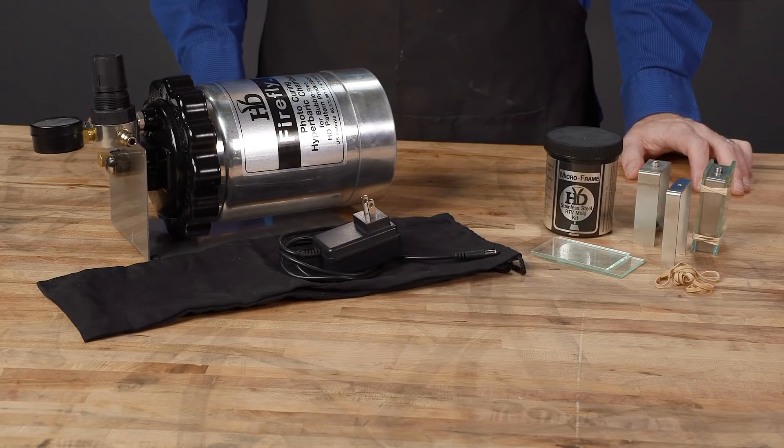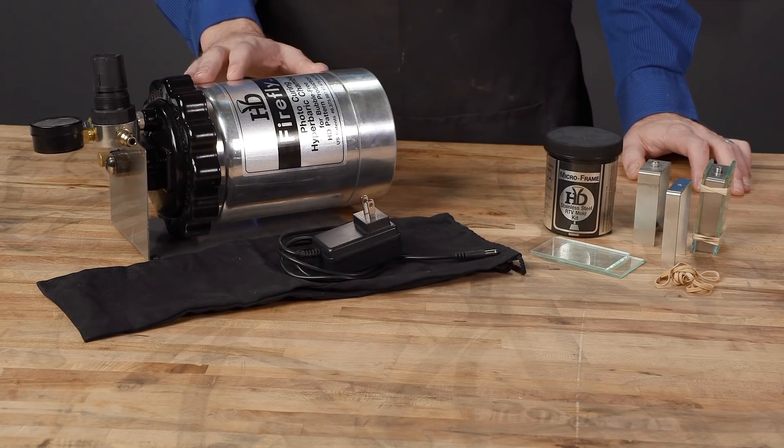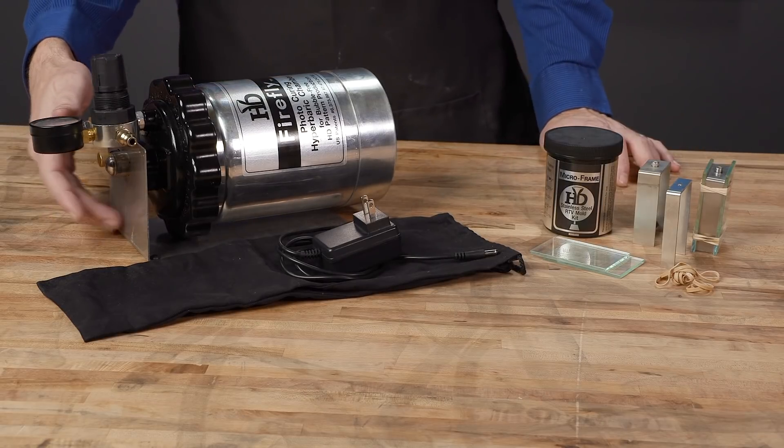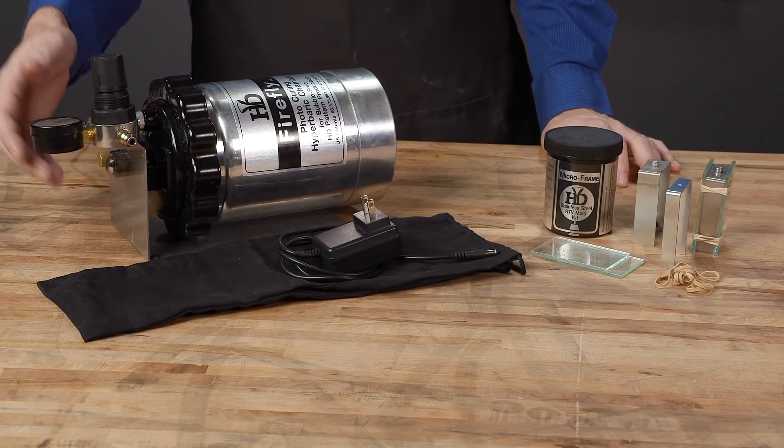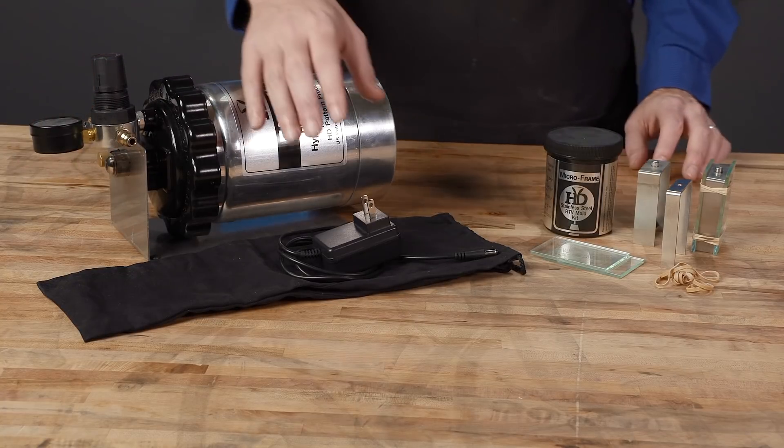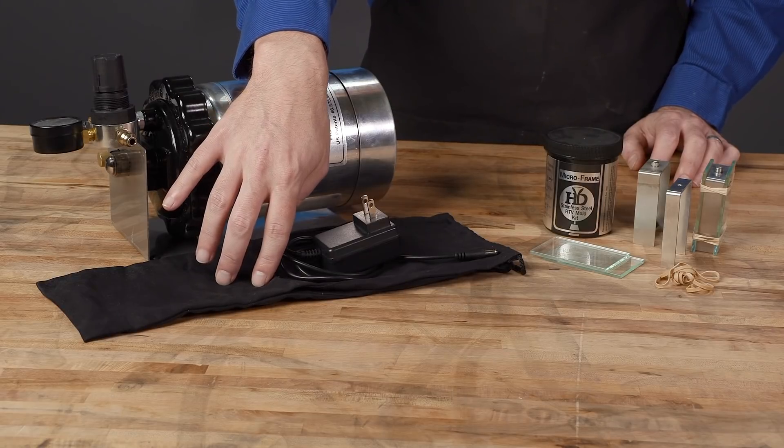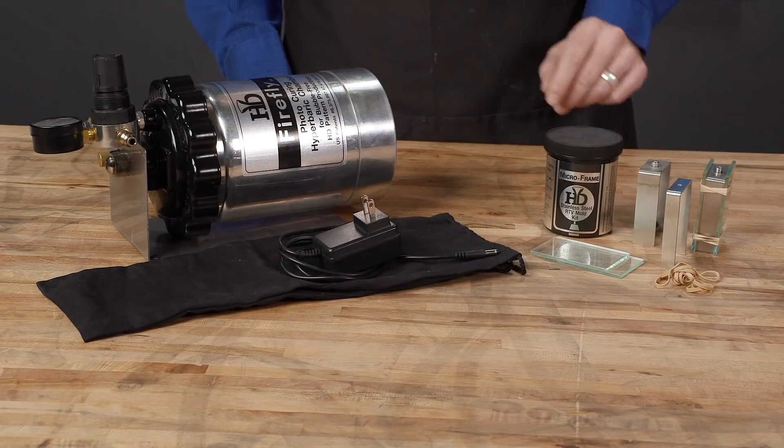First let's examine the components. You should have one Firefly hyperbaric pressure and UV light chamber, one stainless steel stand, one air coupling, one AC power supply, one sling bag, and three stainless steel mold frames.